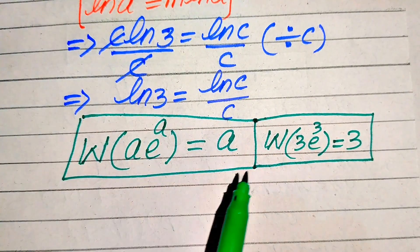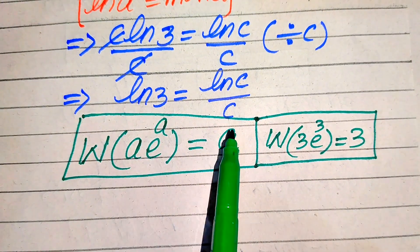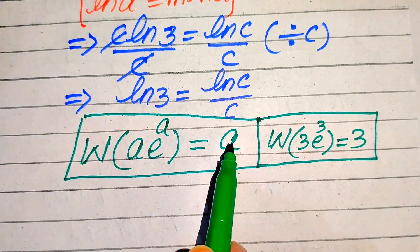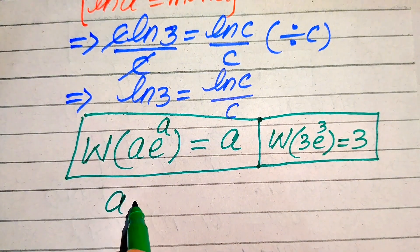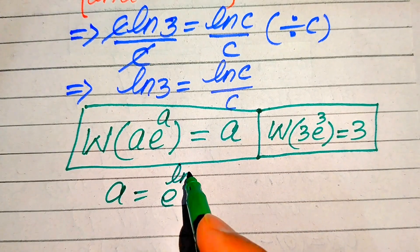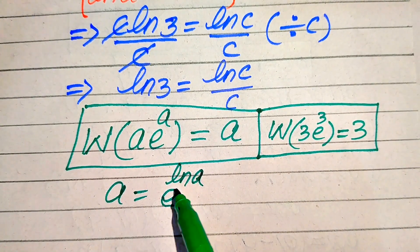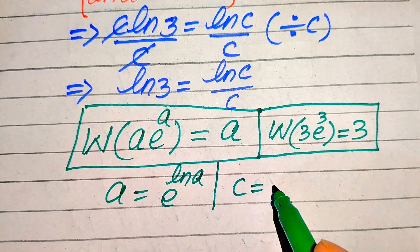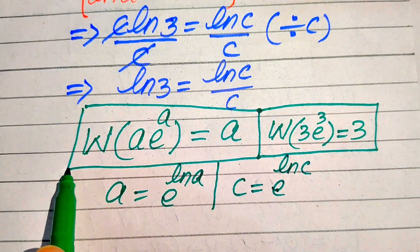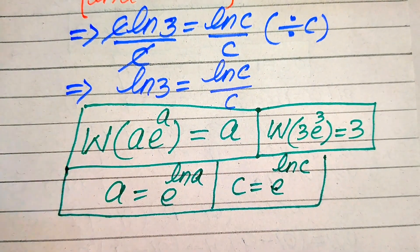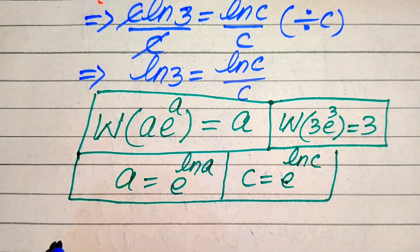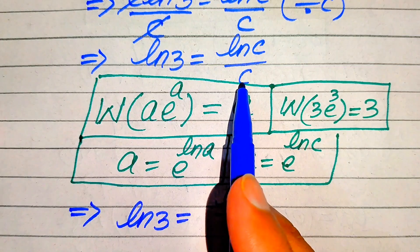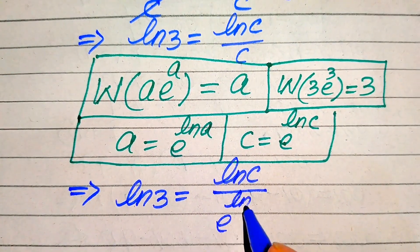In order to apply the Lambert W function, we first need to make an exponential term with base e. To do this, we use the exponent law that any number a can be written as e to the power of log a, since e and log cancel each other, giving a. Using this law, we write c as e to the power of log c. So the right hand side of the equation becomes log of c divided by e to the power of log c.